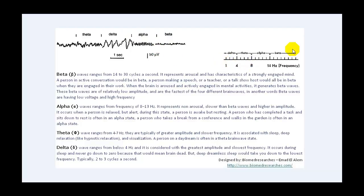On the diagram, the delta wave has up to 4 waves per second, theta increases up to 8, alpha up to 14, and beta from 14 up to 30 hertz. Beta waves, abbreviated with their symbol, range from 14 to 30 cycles per second. They represent arousal and a strongly engaged mind. A person in active conversation, making a speech, a teacher, or a talk show host would all be in beta. Beta waves are of relatively low amplitude and are the fastest of the four brain waves — low voltage and high frequency.